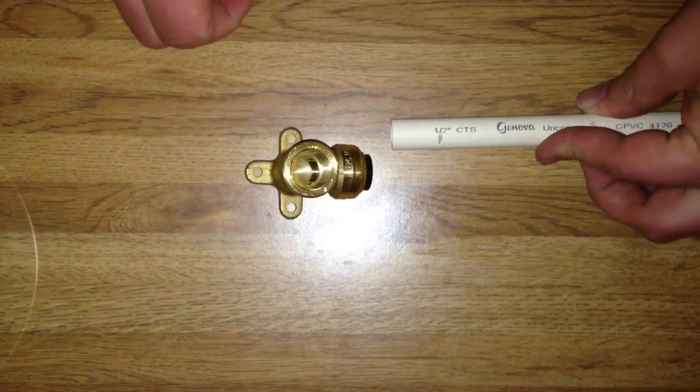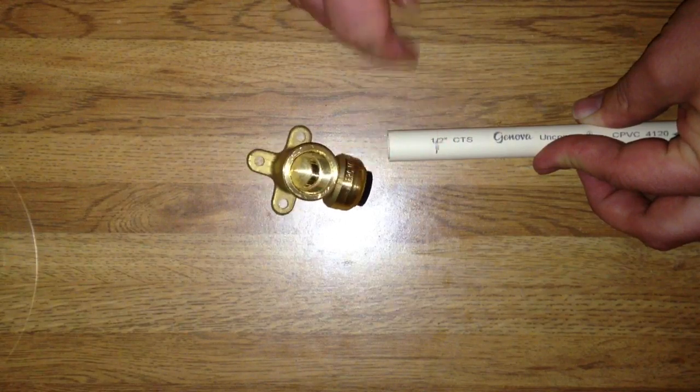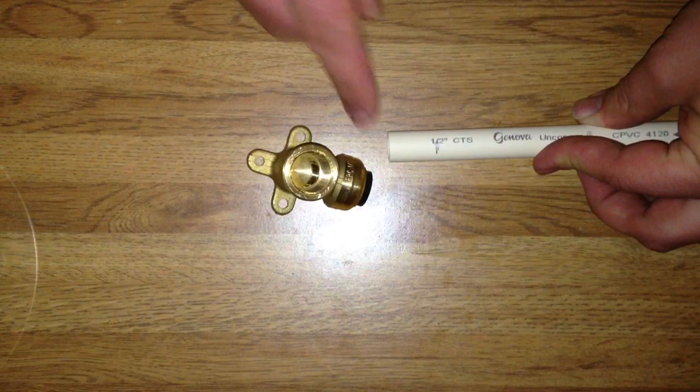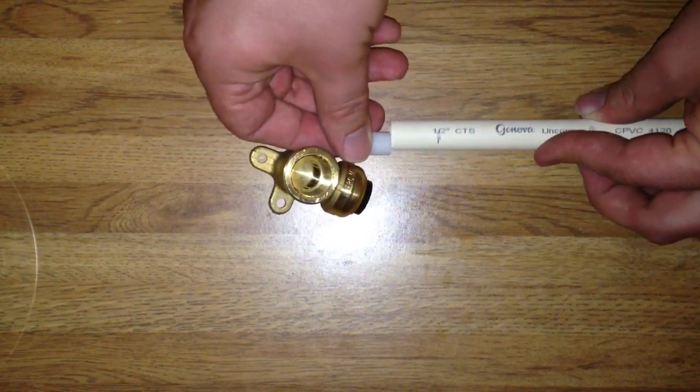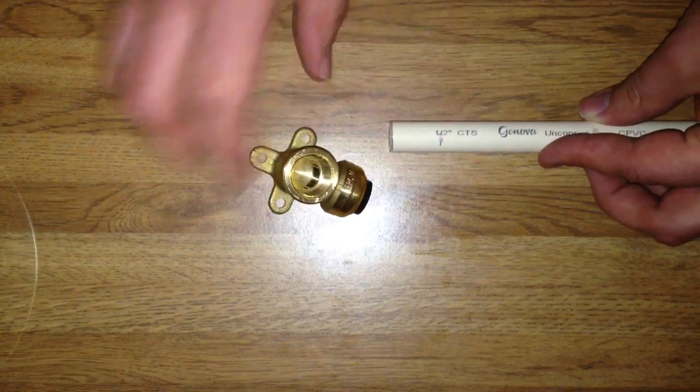The directions say you need to measure the depth that the pipe should slide into the fitting, and the depth depends on the diameter of the pipe. Since this is a half-inch pipe, it should slide 15 sixteenths of the way in, and I've got that marked right here.